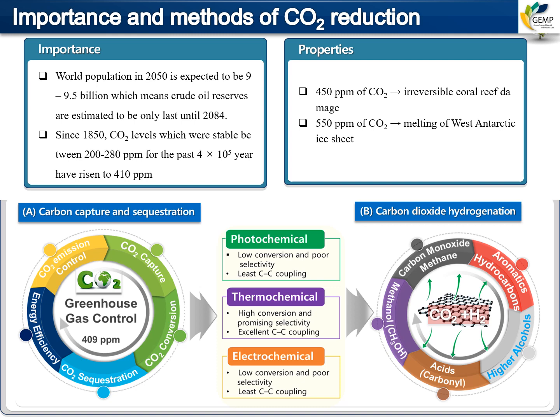Each process has its own advantages and disadvantages. Photochemical CO2 reduction has lower conversion and poor selectivity with the least carbon-carbon coupling. Thermochemical CO2 reduction has high conversion and promising selectivity with excellent carbon-carbon coupling. Electrochemical CO2 reduction has lower conversion and poor reactivity with the least carbon-carbon coupling. Most people use thermochemical CO2 reduction with suitable catalysts to convert CO2 into hydrocarbons.